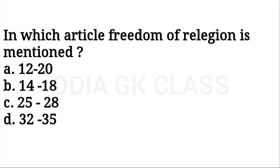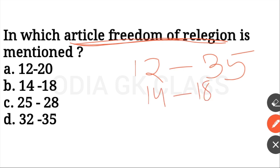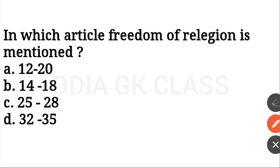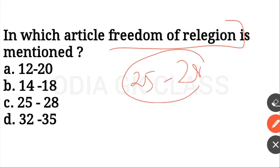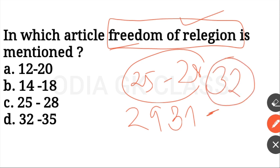In which article is freedom of religion mentioned? The fundamental rights are covered in Articles 12 to 35. Article 14 to 18 covers equality before law; Articles 19 to 22 cover freedom; Articles 23 to 24 cover right against exploitation; Articles 25 to 28 cover freedom of religion; Articles 29 to 30 cover cultural and educational rights; and Article 32 covers the right to constitutional remedies.